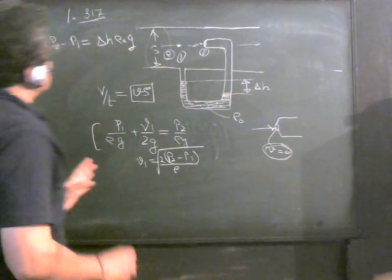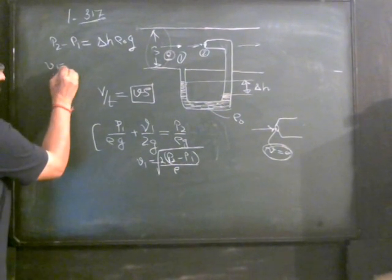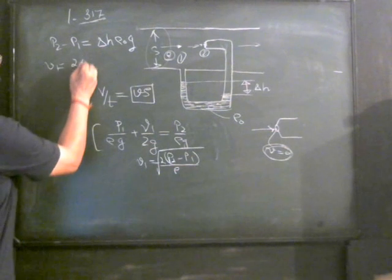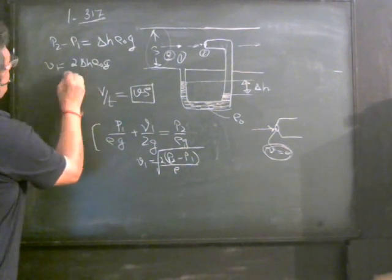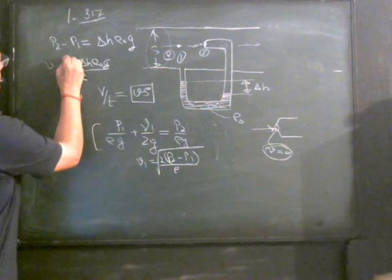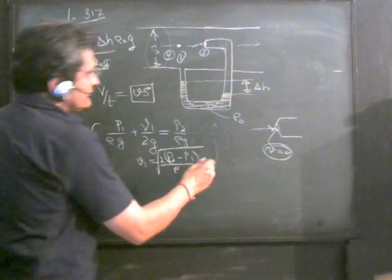These are just basic precautions we have to take. Now we get v₁ = √(2Δh·ρ₀·g/ρ), which is the value of the velocity.